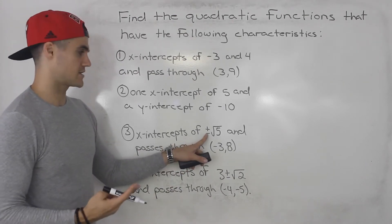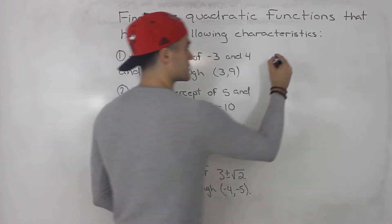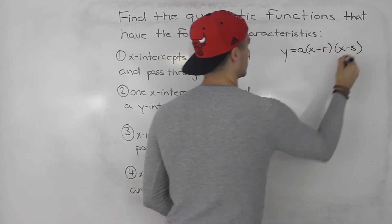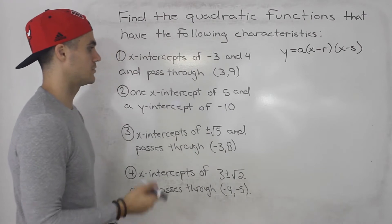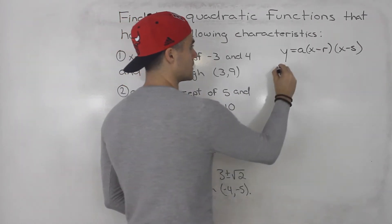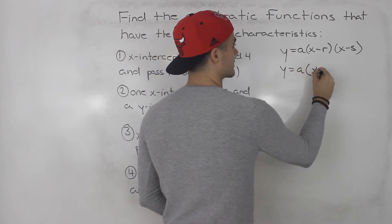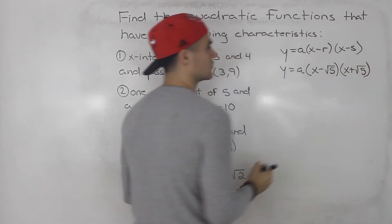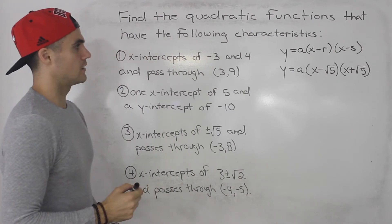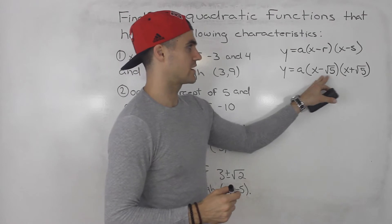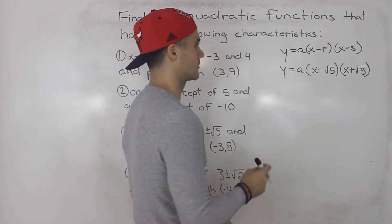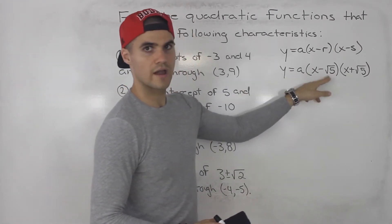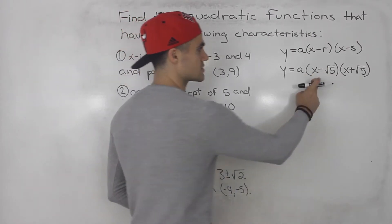We're given two x-intercepts: plus and minus root five. Even though we're dealing with radicals, the steps are the same. We plug in plus and minus root five for r and s to get y equals a(x - √5)(x + √5). Before solving for a, we want to expand these brackets to get rid of the radicals. Notice this is a difference of squares.